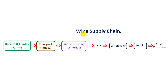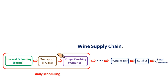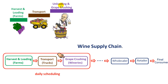This is a simplified version of a wine supply chain. We are going to talk about the daily scheduling, where these activities are performed: namely harvest and loading in farms, then the transport from the farms to the winery, then in the winery unloading and grape crushing, and finally the transport from the winery back to the farms.